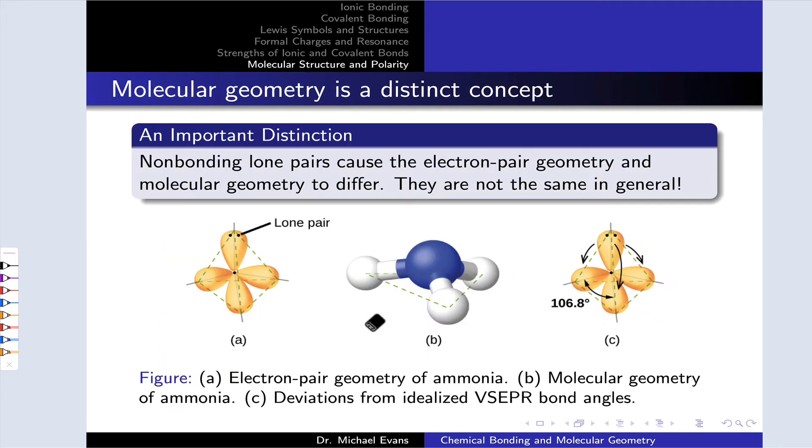Now, what we just surveyed are what we call the electron group arrangements or electron pair geometries. These are the arrangements of the electron clouds around the central atom regardless of whether we're thinking about the electron cloud as being a lone pair or a bond.